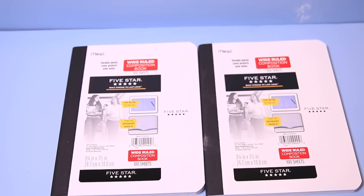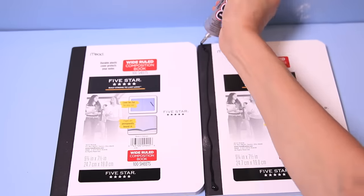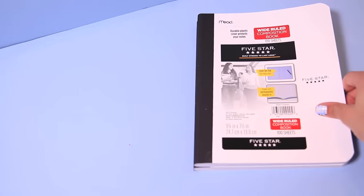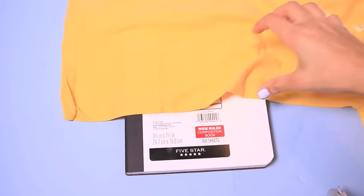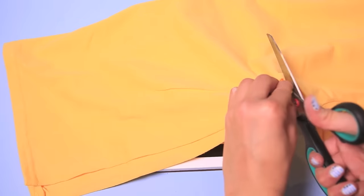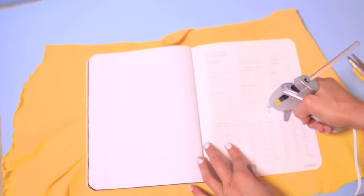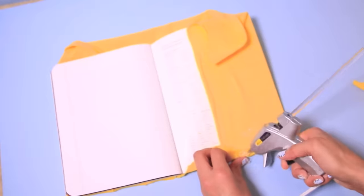For the s'mores notebooks, take two notebooks and glue them on top of each other. Next, take a graham cracker colored t-shirt, whatever that means, and fold it in half and cut it. Then glue the edges to the first and last page in the notebook.